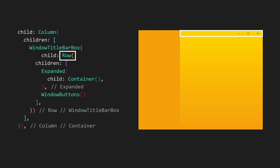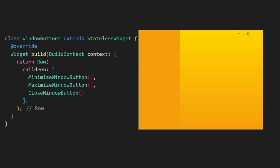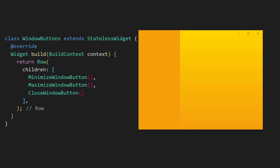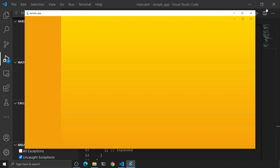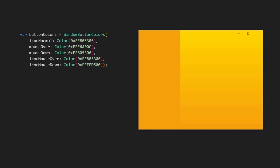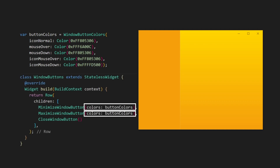The title bar area will expand to fill the available width, and then we will have the window buttons — we'll use a row for this. Now let's create the window buttons widget, also using a row. The package comes with some widgets we can use: MinimizeWindowButton, MaximizeWindowButton, and CloseWindowButton. If we run the app, you can see those three buttons do what you expect. If we want the buttons to have colors that match our design, we can specify and set those colors on our buttons.